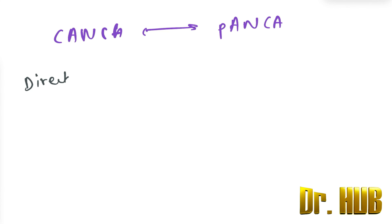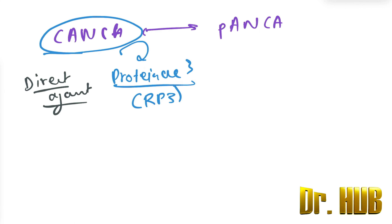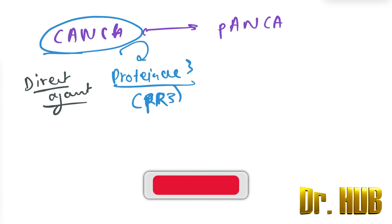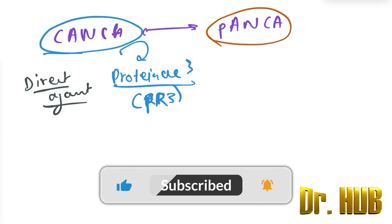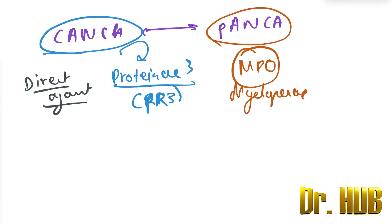The first point of comparison is what each antibody is directed against. C-ANCA is directed against Proteinase 3, also written as PR3. P-ANCA is directed against myeloperoxidase, abbreviated as MPO.